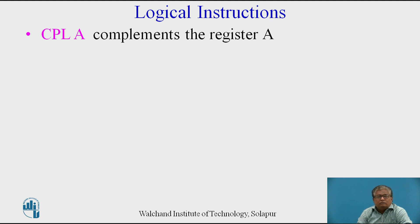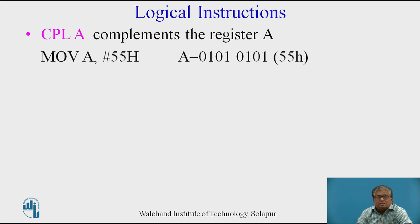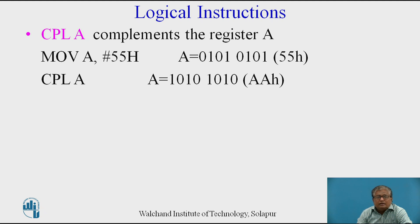The CPL instruction complements register A. We cannot use this instruction with other registers — the format is simply CPL A. Example: MOV A, #55H — binary 0101 0101. Complement A means all 0s are turned to 1 and all 1s are turned to 0. The new value in register A will be AAH.